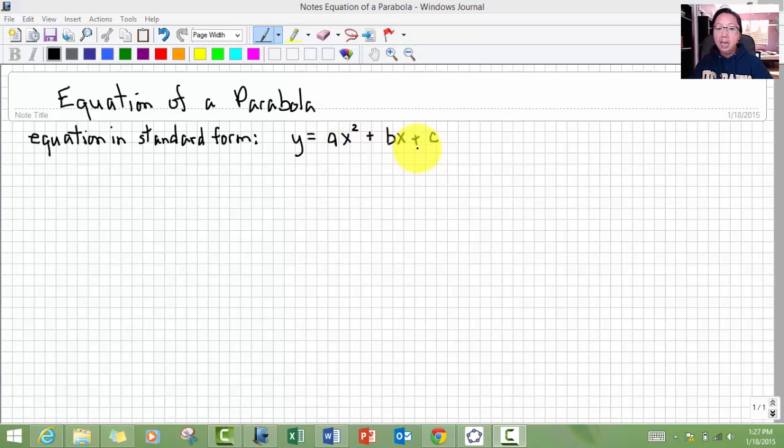And a, b, and c are coefficients. They're numbers. So let's look at the parts of a parabola so we can understand the idea that goes with this.